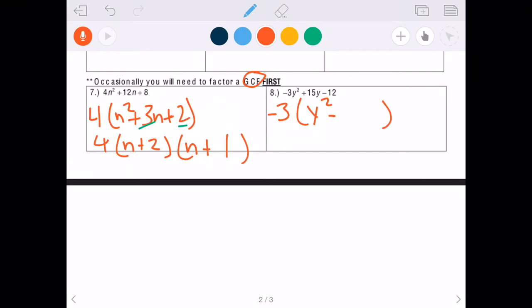So the signs are just going to flip, similar to pulling out a negative one. So now we're going to have positive y squared minus 5y plus 4 in the parentheses. So I'm going to have my binomials here.